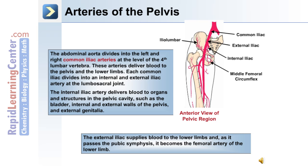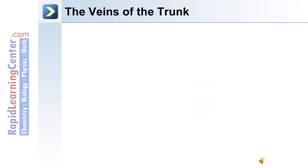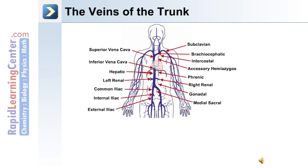The veins in the trunk region of the body: similar to the arterial side, there is an internal and external iliac vein, and these drain blood into the common iliac. The kidneys are drained by the left and right renal veins, and the liver by the hepatic vein. This blood is delivered into the inferior vena cava and eventually into the right atrium of the heart.